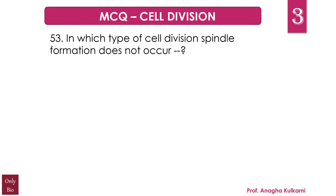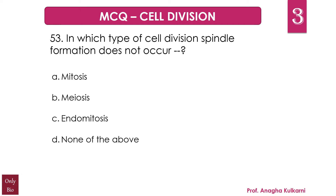Question number 53: In which type of cell division does spindle formation not occur? A. Mitosis, B. Meiosis, C. Endomitosis, D. None of the above. The correct answer is C, Endomitosis. Friends, endomitosis is the right answer because here it is an irregular nuclear division of the nucleus.